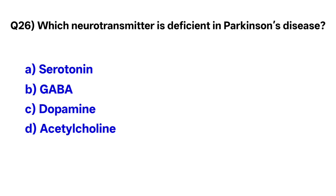Question number twenty-six: Which neurotransmitter is deficient in Parkinson's disease? The correct option is C, dopamine.